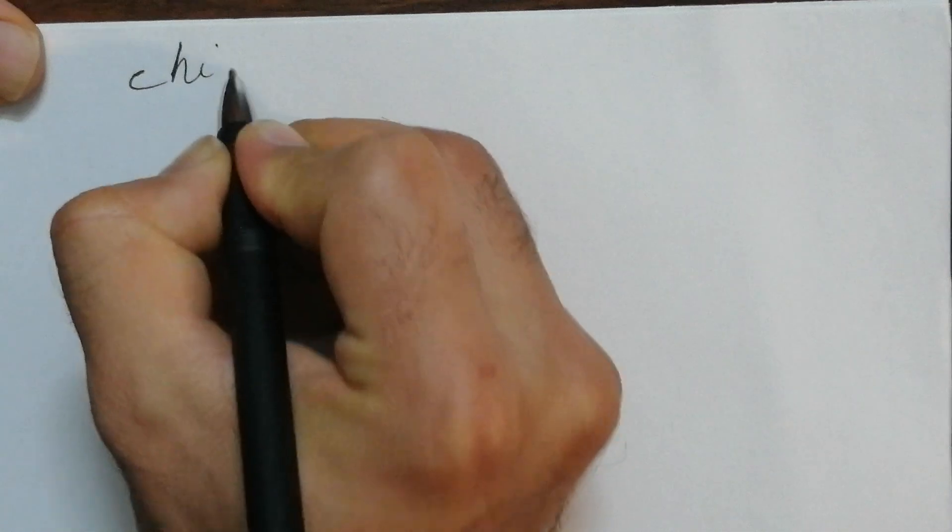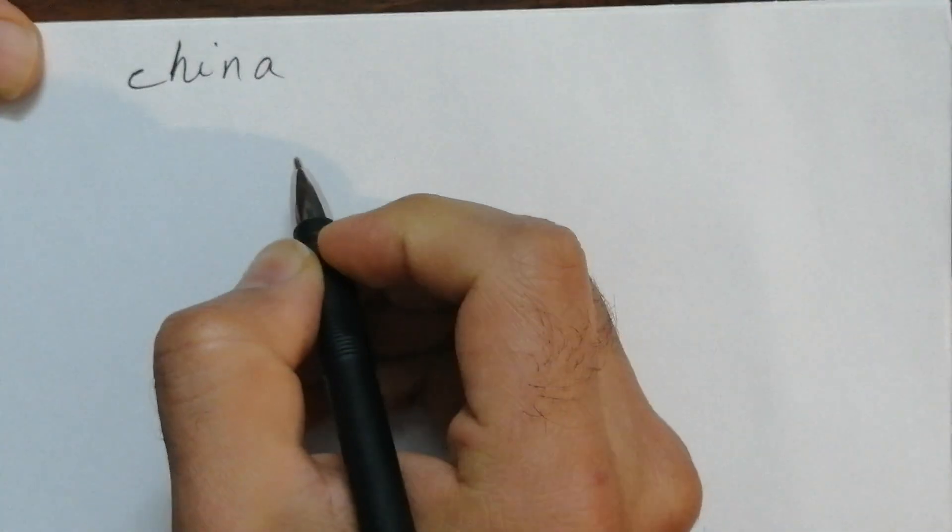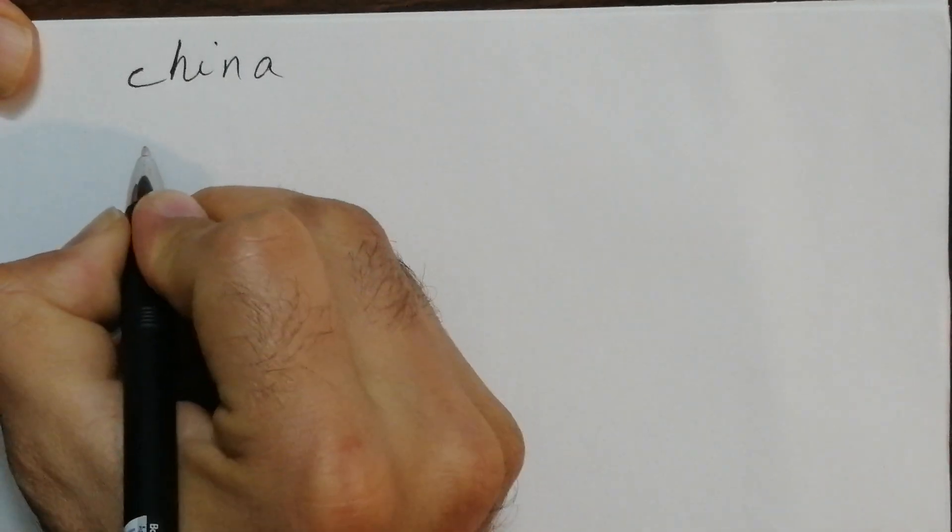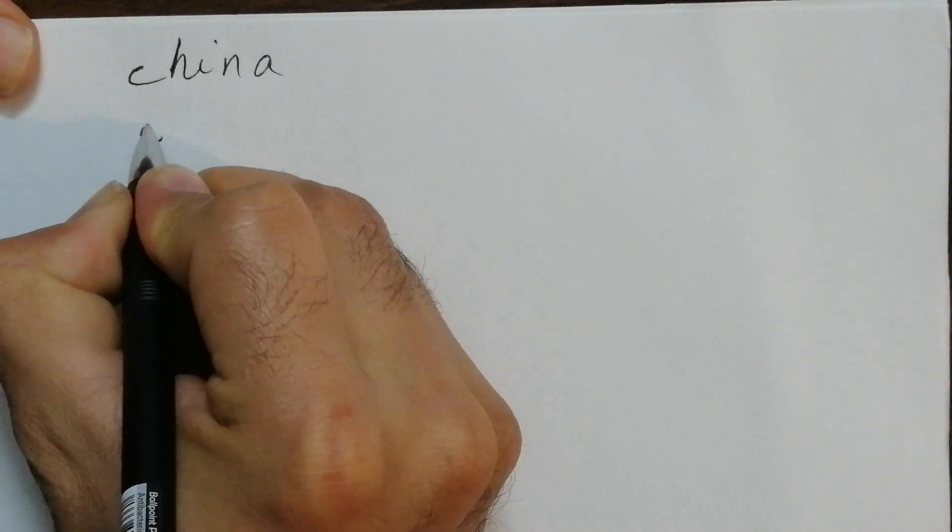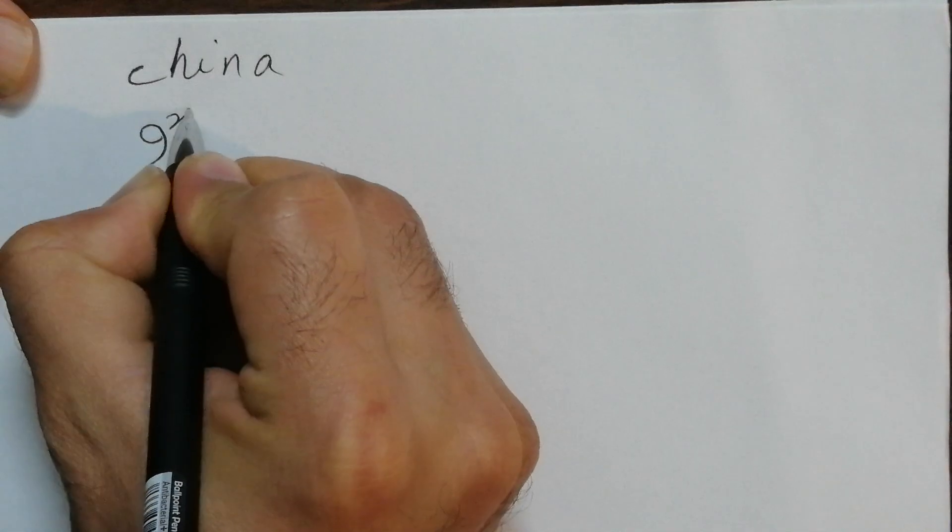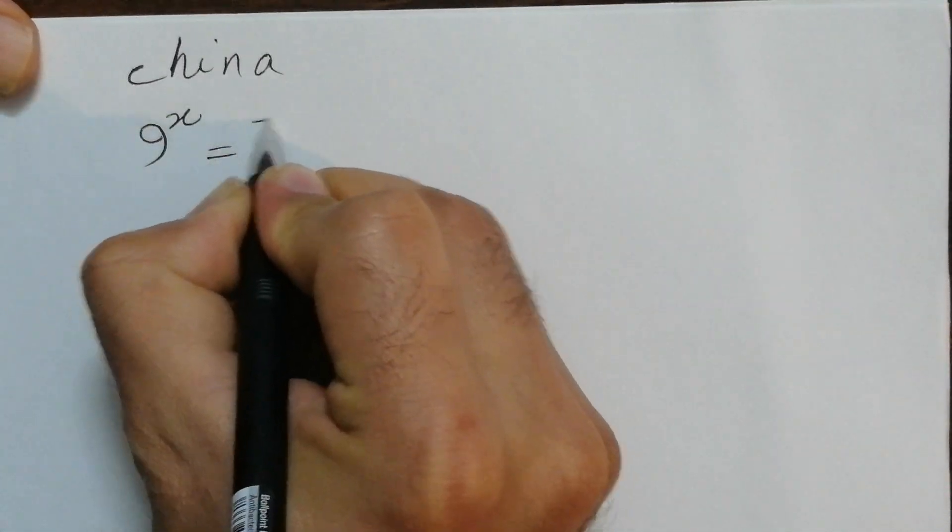Today I'm here with another Math Olympiad problem from Chinese Math Olympiad. So that's from China. Here is the problem: 9 to the power of x equals 36.